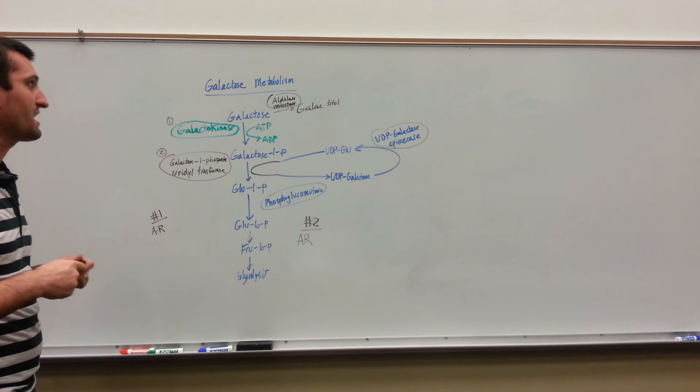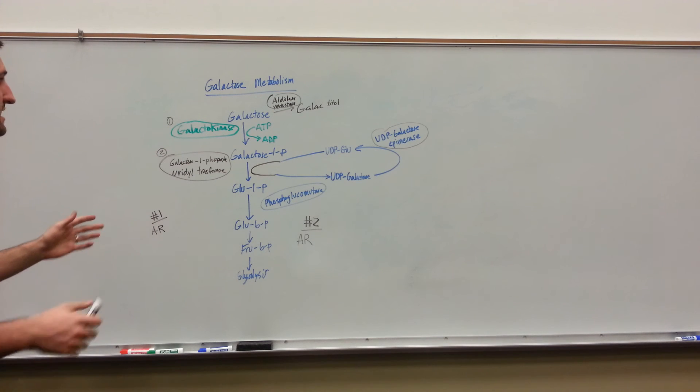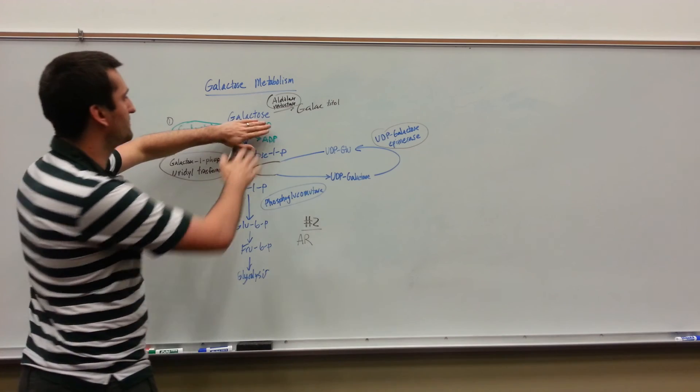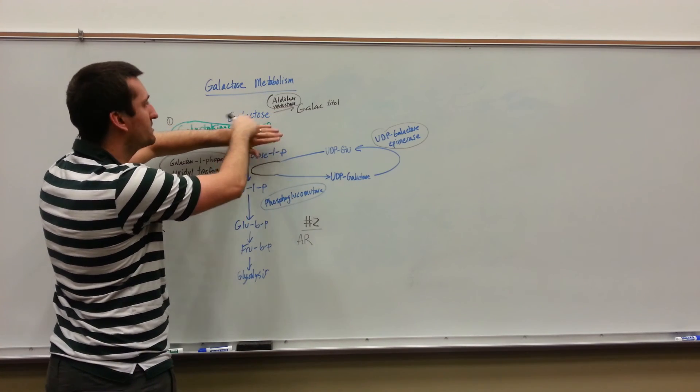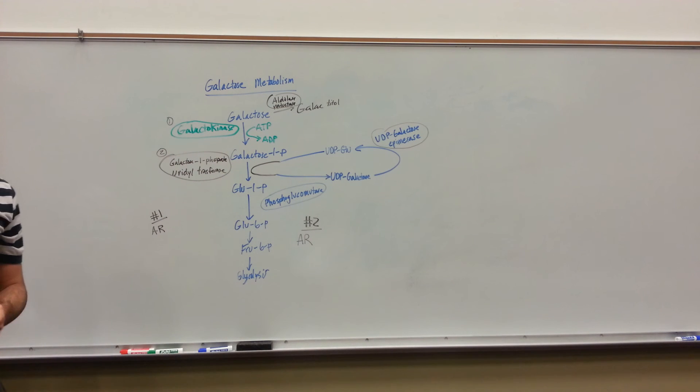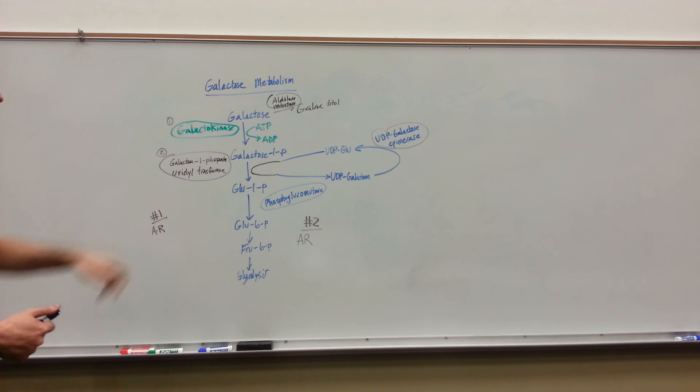If you see a child with cataracts, this should be on your differential. Possibly they have a galactokinase deficiency, so you have this pathway that gets blocked. The galactose then will get converted into galactitol in your eye. You can get cataracts in the lens of your eye.